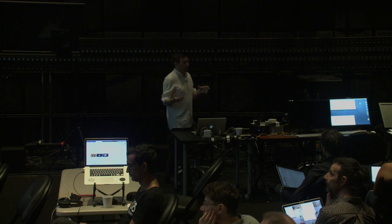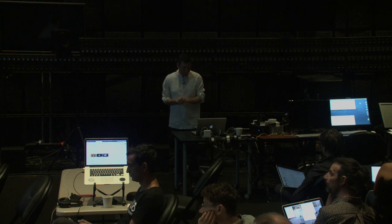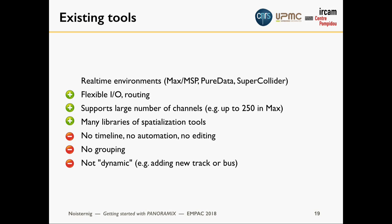It's getting better with Atmos because the film industry needs more channels and is pushing DAW software companies. Real-time environments like Pure Data, SuperCollider, and Max/MSP give you all the flexibility and support a large number of channels — a recent version of Max/MSP is not even limited to 250 channels anymore; we recently ran 700 channels on one machine without problems. But these environments have no timeline, no grouping, and everything you want to do requires patching.